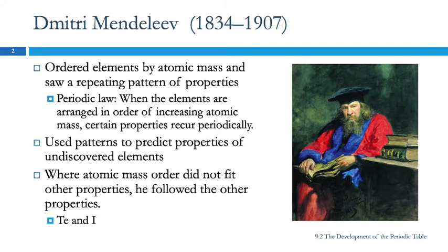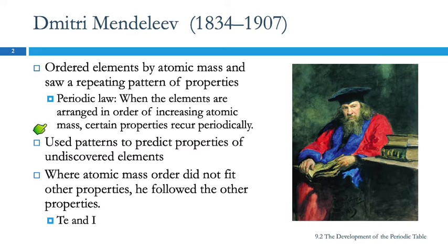Dmitry Mendeleev is often given credit for creating the first periodic table. He did this by ordering the elements by atomic mass, and we talked about this before. That led to the periodic law: when elements are arranged in order of increasing atomic mass, certain properties recur periodically — hence the name, periodic table. He used the patterns there to predict undiscovered elements.